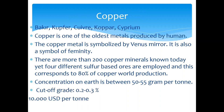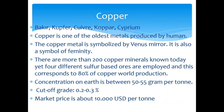Copper — in German, Kupfer; in French, Cuivre; Cyprian in Latin. Copper, as you know, is one of the oldest metals produced by humans. The reason was because copper is found in pure form and can be beaten into shape even when cold, because it's a ductile metal. The copper metal is symbolized by a Venus mirror. There are more than 200 copper minerals known today, yet four different sulfur-based ores are employed, and this corresponds to 80% of copper world production.